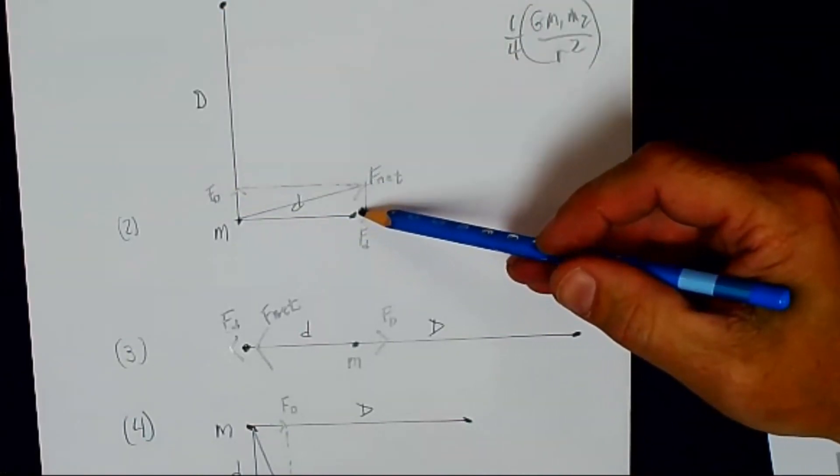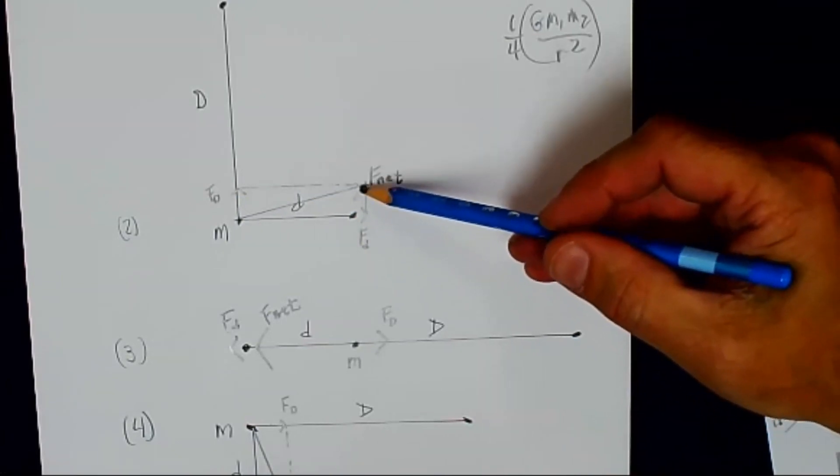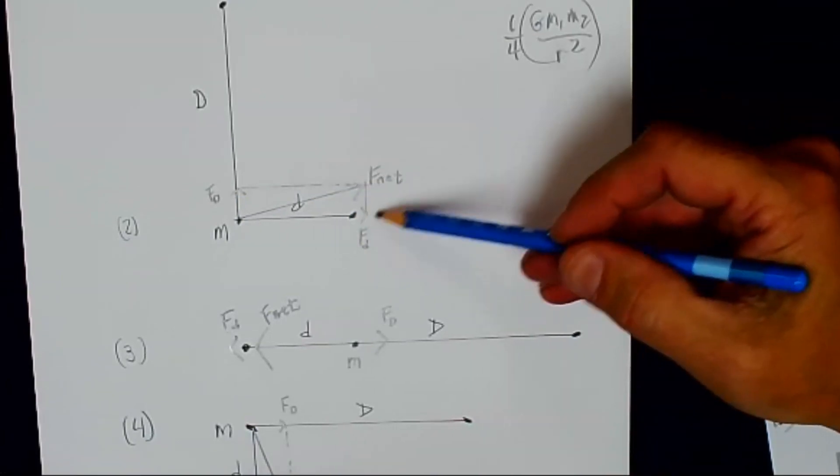Little d is much closer, so its contribution is bigger. So when you add those two vectors, the net force is closer to the larger force.